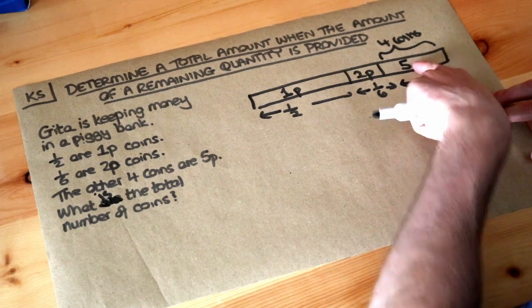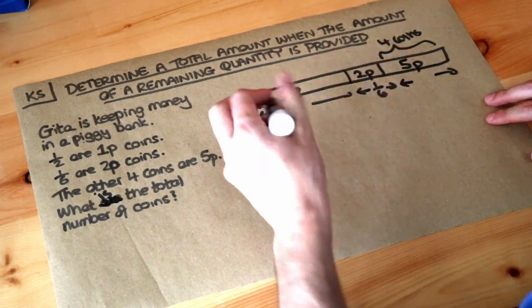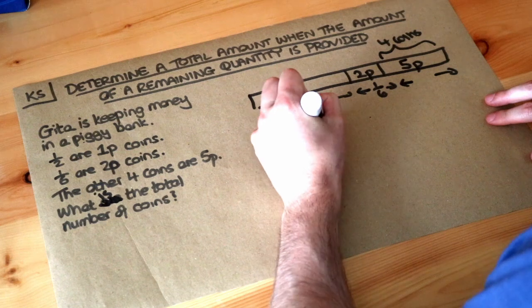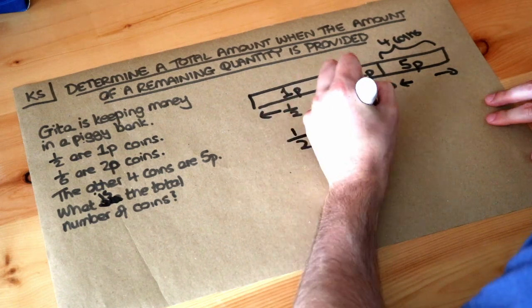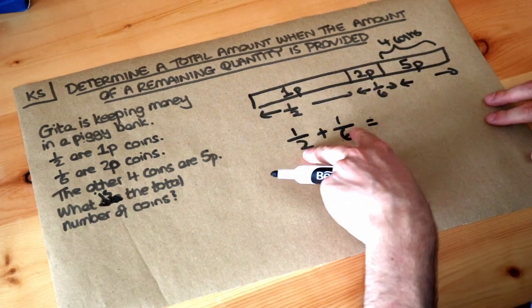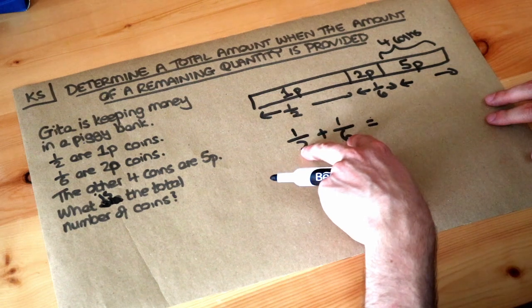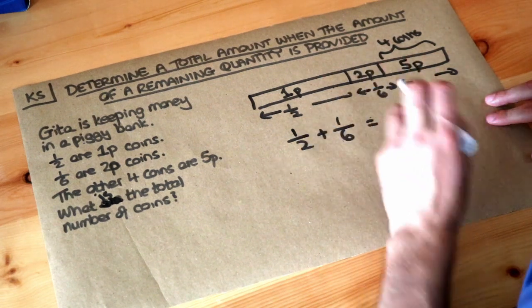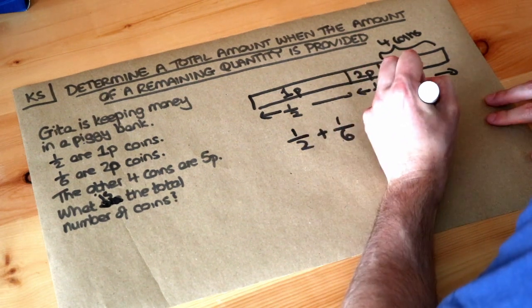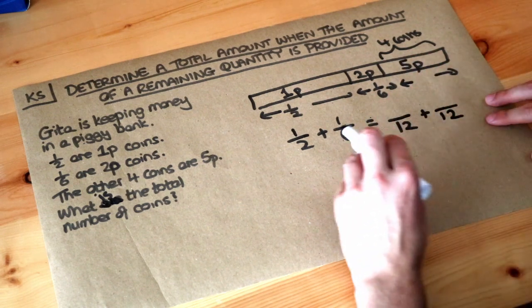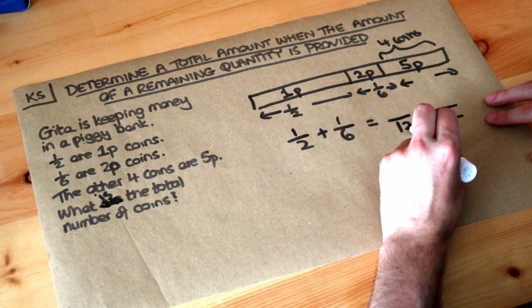Now to work out what fraction are 5p coins, we need to first add these two fractions. So if we do a half plus a sixth, we need a common denominator. So remember we find a number that 2 and 6 both go into. It's 12, so do these over 12, so 2 to 12 times it by 6.